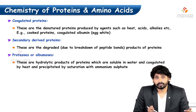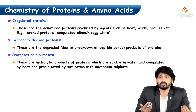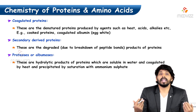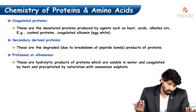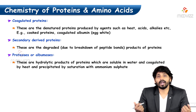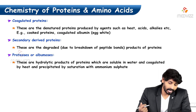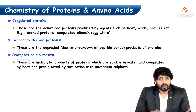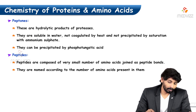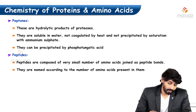Coagulated proteins are denatured proteins produced by agents such as heat, acids, or alkalis. Cooked food proteins and coagulated albumin in egg white are the best examples of coagulated proteins. Secondary derived proteins are the degraded products of proteins due to breakdown of peptide bonds — including proteoses or albumoses, peptones, and peptides.